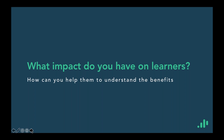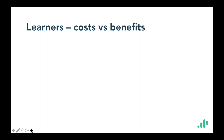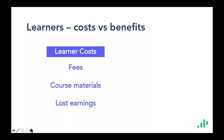So let's get into the content. First of all, what impact do you have on your learners — the core reason for your existence? How can you help them understand the benefits of education and particularly the benefits of attending your institution? If we think about it from a cost versus benefits perspective, we can think of costs that learners incur: some might incur a fee, there may be costs for course materials and supplies, and all learners will have a cost in the sense of lost earnings — which will be very different for a 16-year-old versus a 30-year-old manager, for example.